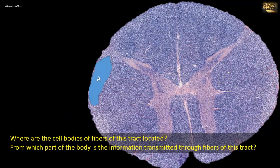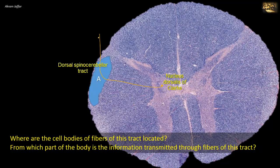Where are the cell bodies of the fibers of this tract located? From which part of the body is the information transmitted? This tract is located at the periphery of the lateral funiculus and is the dorsal or posterior spinocerebellar tract. It is an uncrossed tract. The cell bodies of origin are located in the ipsilateral nucleus dorsalis or Clark's column, at the base of the dorsal horn, in the thoracic and upper lumbar segments. Axons ascend in the dorsal spinocerebellar tract, uncrossed, and enter the cerebellum through the inferior cerebellar peduncle. The tract conveys unconscious proprioceptive information from the lower limb to the cerebellum.